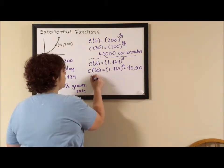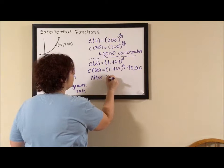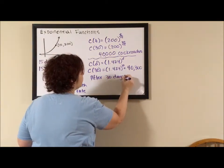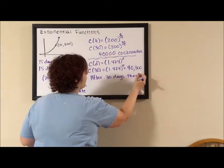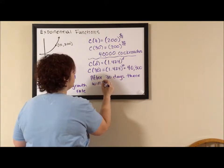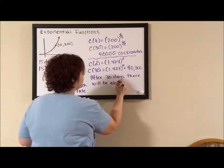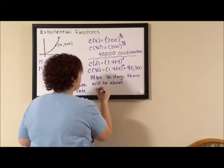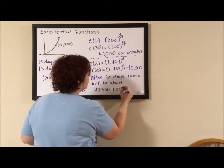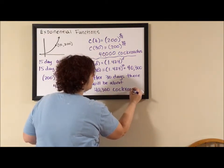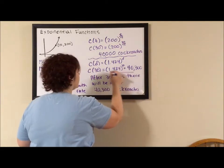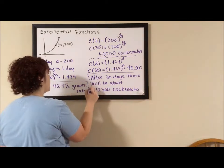So after 30 days there will be about 40,300 cockroaches. Now we have two parts of our answer. We have our sentence here and we have our growth rate here.